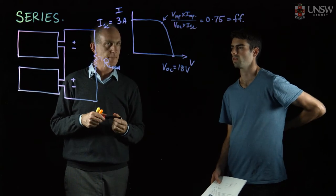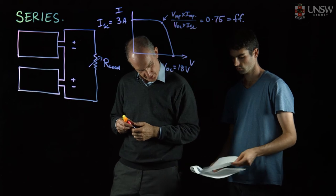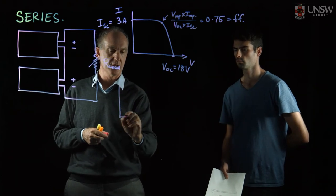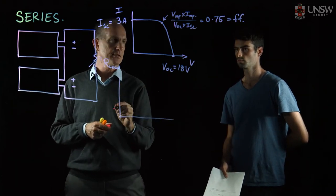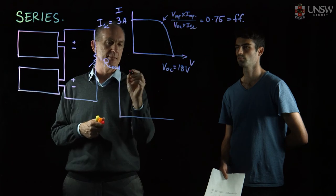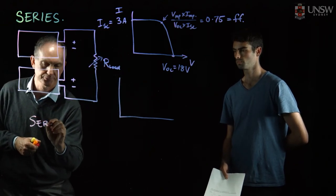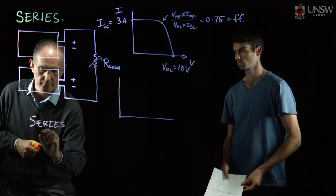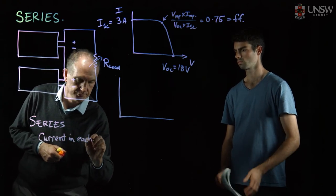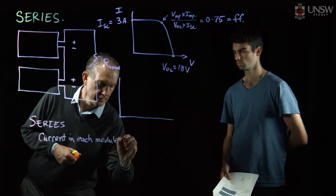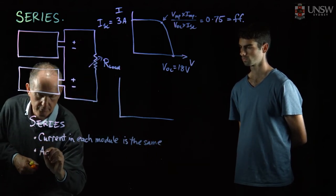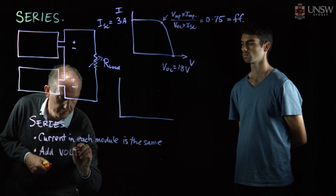What will the two of them look like together? When connected in series, we add the voltages together at the same current — current must be the same in series. So in series: current in each module is the same, and we add the voltages.